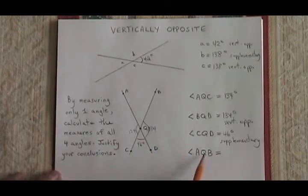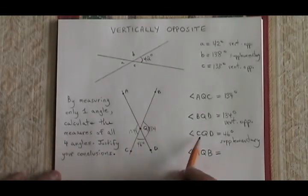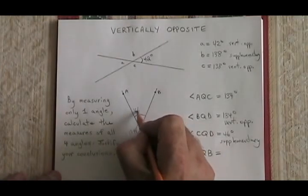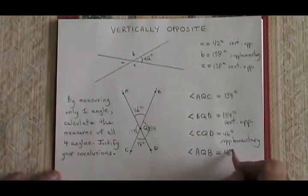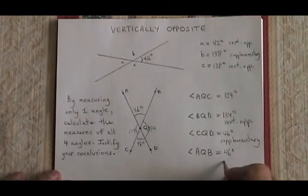Finally, angle AQB is vertically opposite to angle CQD. So it is also 46 degrees. I write in its measure and I justify it by saying vertically opposite.